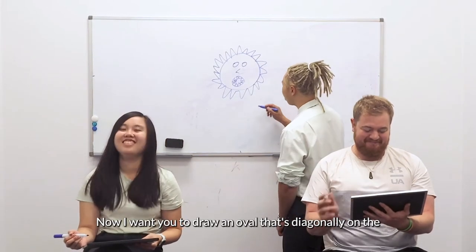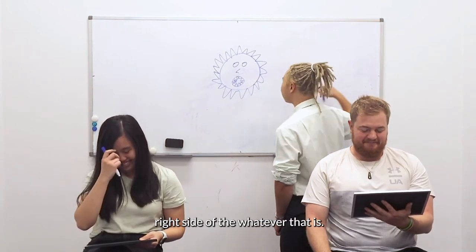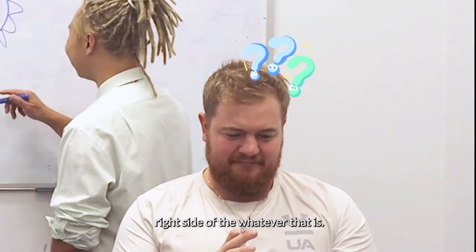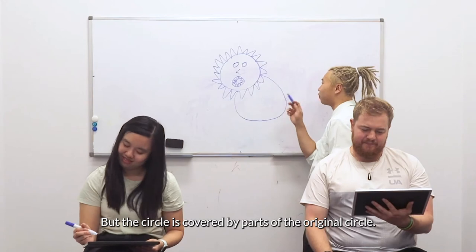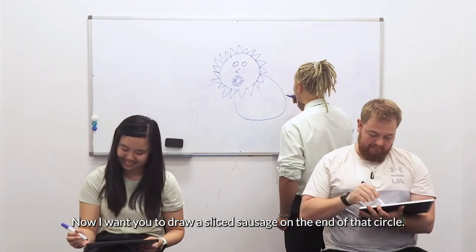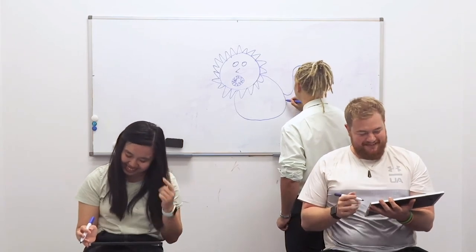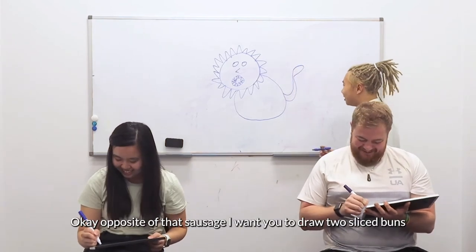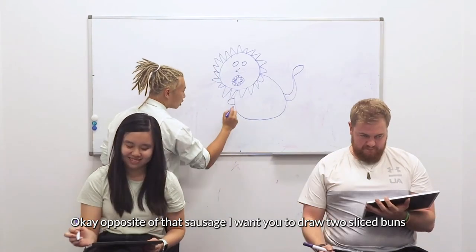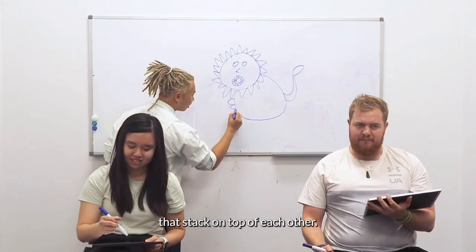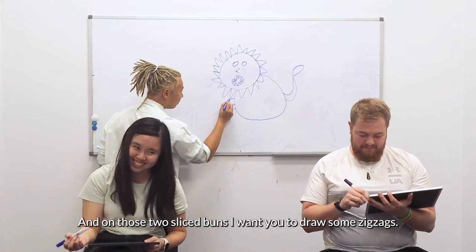Now I want you to draw an oval that's diagonally on the right side, but the circle is covered by parts of the original circle. Now I want you to draw a sliced sausage on the end of that circle. Opposite of that sausage, I want you to draw two sliced buns that stack on top of each other. And on those two sliced buns, I want you to draw some zigzags.